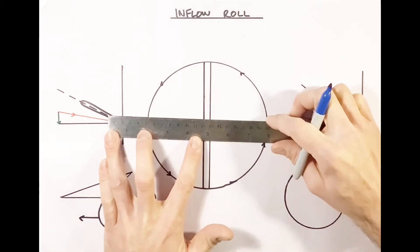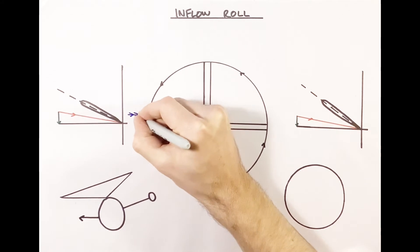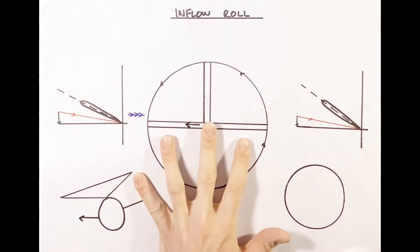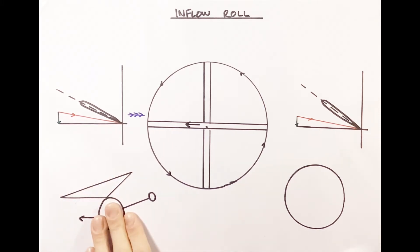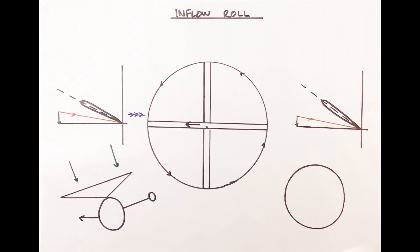That forward movement is going to create a relative airflow — an additional relative airflow — coming from that direction. Thinking back to the translational lift video: before we start moving, we've got a large column of air moving down through the disc as our induced flow. At this point it's moving down at right angles to the disc, being drawn straight down through it.